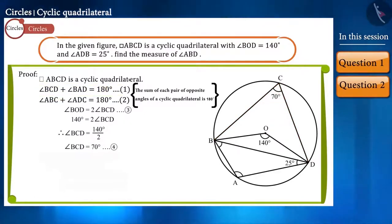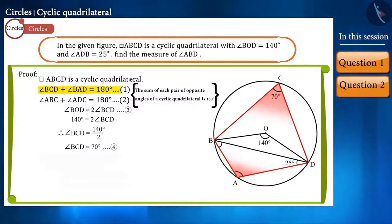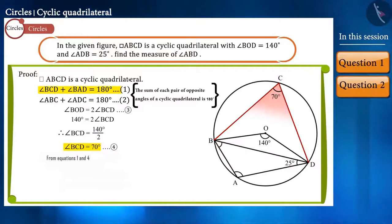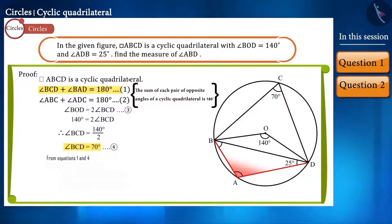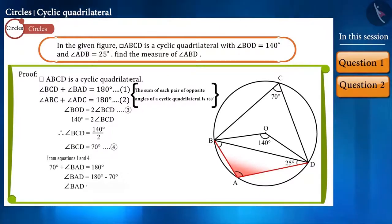Friends, now look at equation 1. In this, the sum of both angles BAD and BCD is given as 180 degrees. By placing the value of angle BCD, we can find the value of angle BAD. We get the value of angle BAD as 110 degrees.